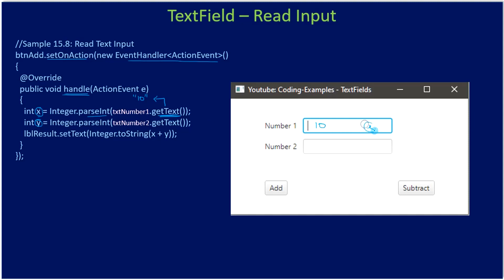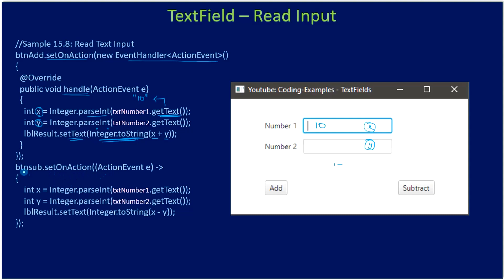We store txtNumber1's value in x and txtNumber2's value in y. Then for lblResult we call setText — since x and y are integers, we sum them first, then pass the result to Integer.toString to get the string form. Using setText we set that string to the label. The same approach is used for the subtract action event — the only difference is we subtract instead of add.